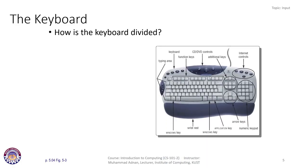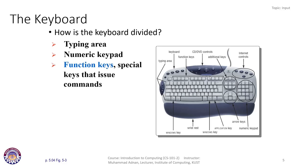The most commonly used input device is the keyboard. The keyboard is divided into different areas: a typing area, a numeric keypad, function keys, and special keys that issue commands. The typing area includes digits 1 through 0, small and capital letters. We also have application keys, Windows keys, wrist area, numeric keypad, arrow keys (also called cursor keys), and additional keys for print screen, delete, etc.